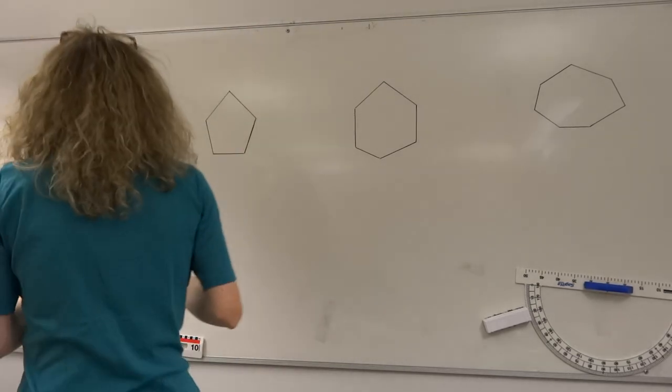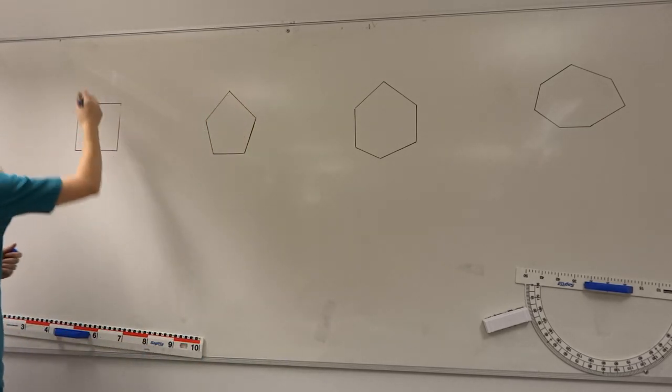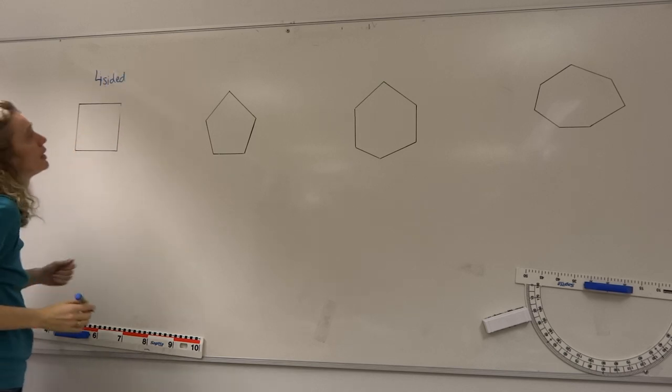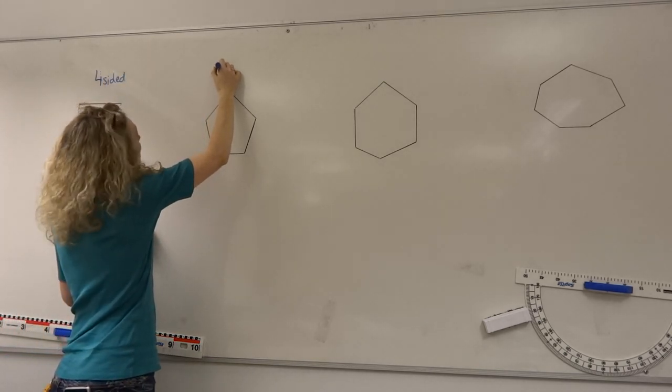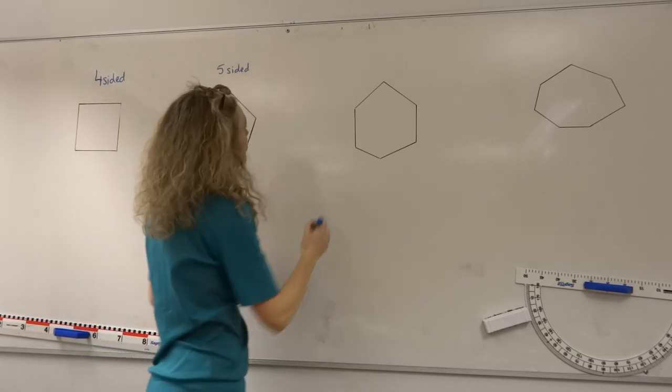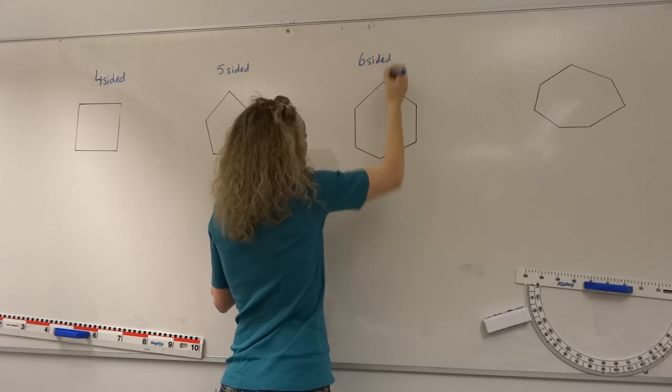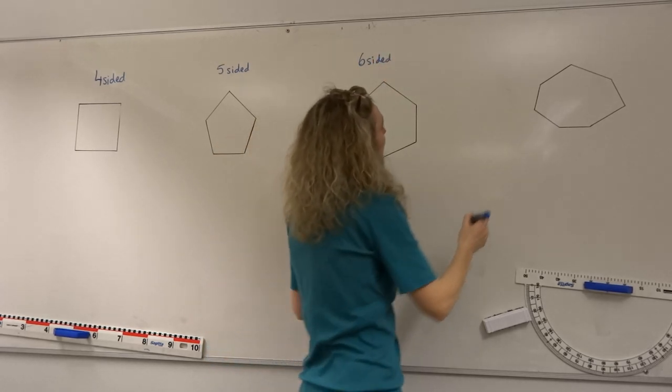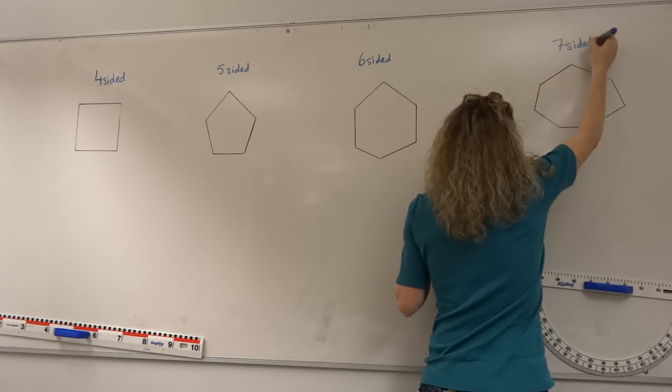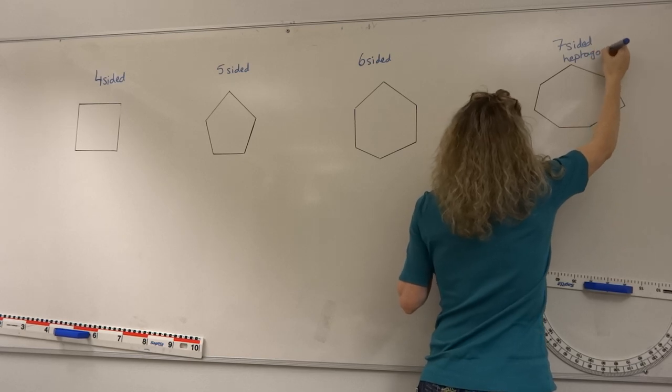So the question here is how many diagonals do these different shapes have? Here we have a four-sided shape, a square. Here we have a five-sided shape, which looks like a regular pentagon. Here we have a six-sided shape, which is not a regular hexagon. And here we have a seven-sided shape, which is not a regular heptagon, but it is a heptagon.